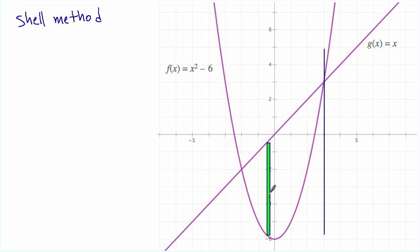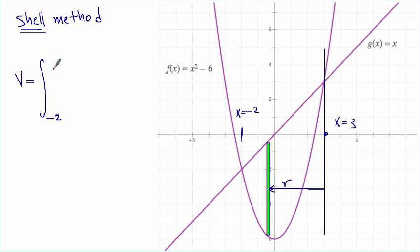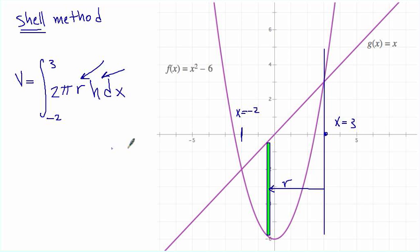Now, with the shell method we need to use this formula: volume equals the integral from x equals negative 2 to x equals 3. Because we're talking about a cylinder and its circumference, the formula is 2π·r times the height times the thickness, which in this case is dx. The hard part is determining what r and h are.